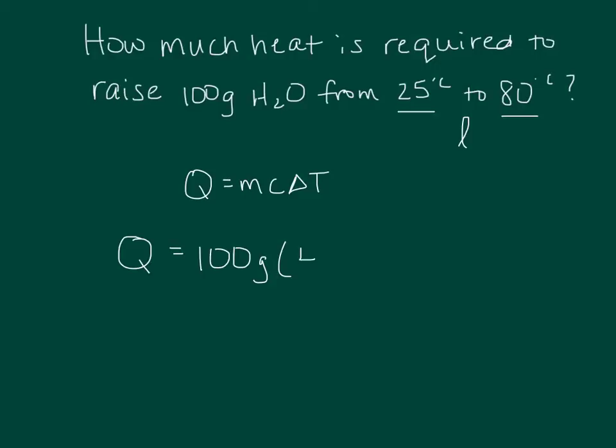This will be given to you on the test or quiz, which is 4.18 joules per gram degrees Celsius. You don't have to worry about the units, but just so you can see how this works, times our delta T.